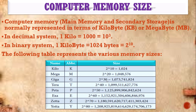Gigabyte is 2 to the power 30 — that is 1024 megabytes is 1 gigabyte. Terabyte is 2 to the power 40 — 1024 gigabytes is 1 terabyte. Petabyte is 2 to the power 50 — 1024 terabytes is 1 petabyte. Exabyte is 2 to the power 60 — 1024 petabytes is 1 exabyte. Zetabyte is 2 to the power 70 — 1024 exabytes is 1 zetabyte. Yottabyte is 2 to the power 80 — 1024 zetabytes is 1 yottabyte. These are the representations of memory sizes.